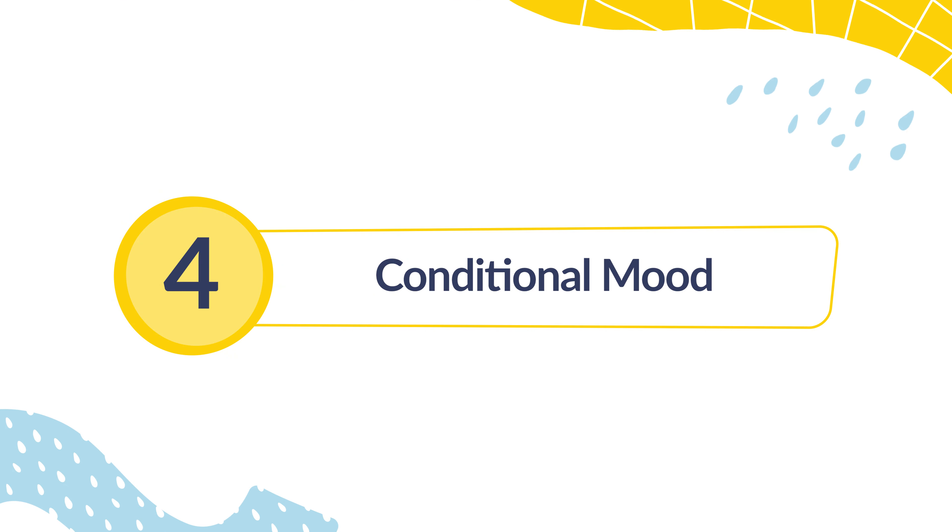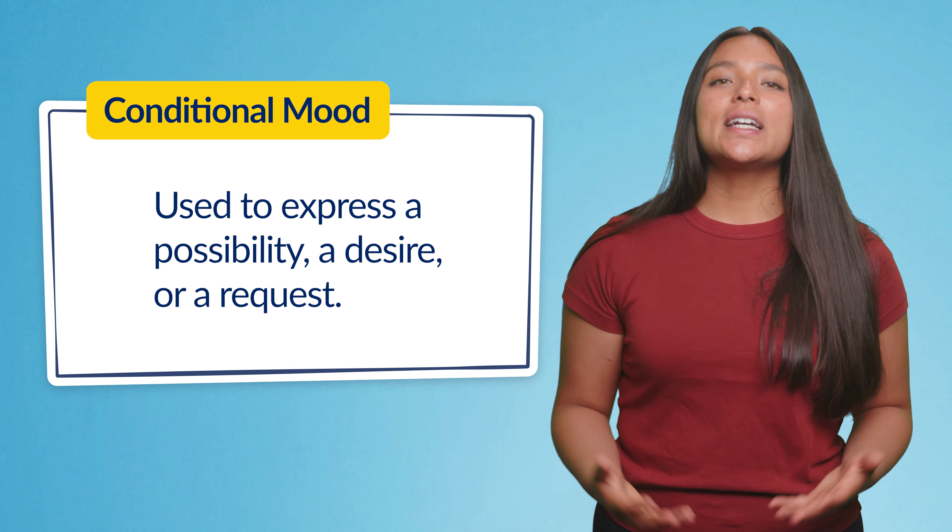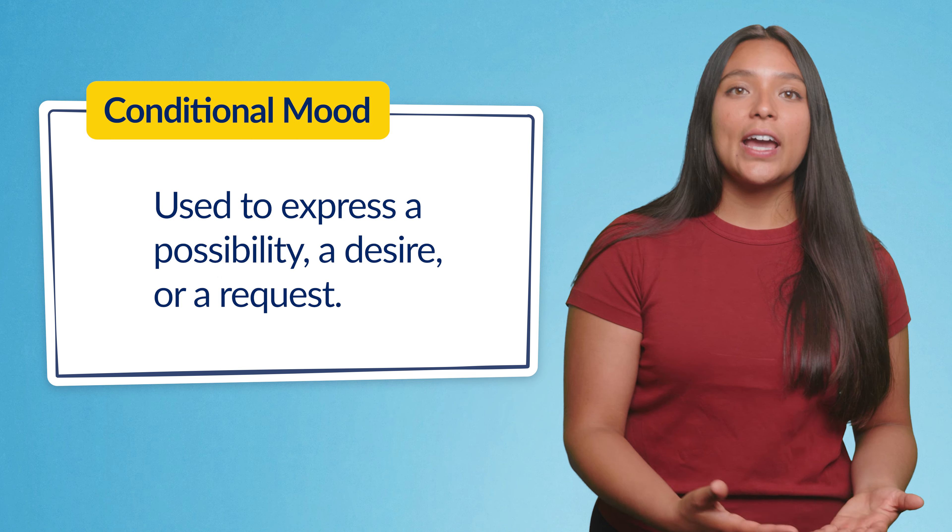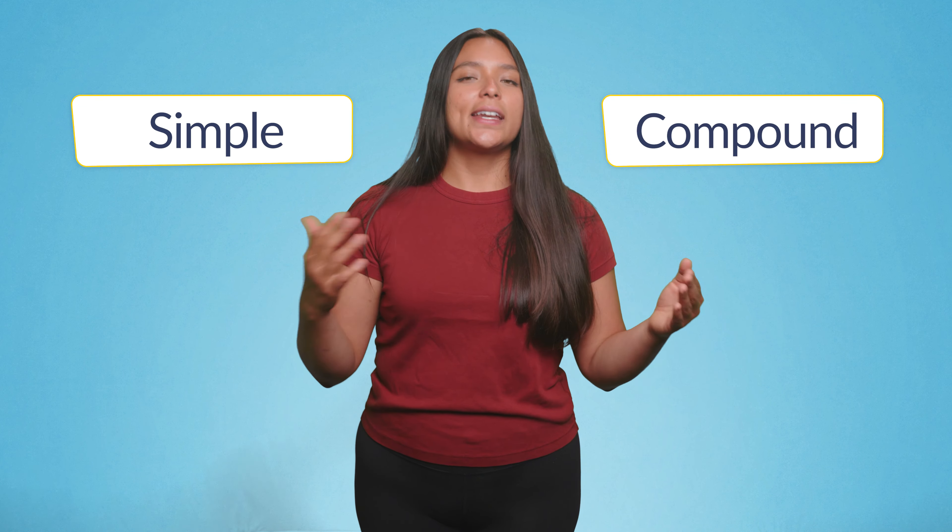We're ready to talk about our fourth and final mood. The conditional mood comes in at number four. We use the conditional mood to express a possibility, a desire, or a request. Basically, if you were to introduce a possibility in English using words like could, would, should have, or probably, you'll be using the conditional for these situations in Spanish. We could also use the conditional to talk about hypothetical situations using if clauses — if one thing happens, then the other is likely to happen. There are two tenses in the conditional: simple and compound.